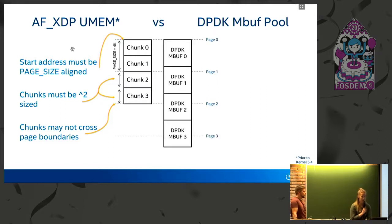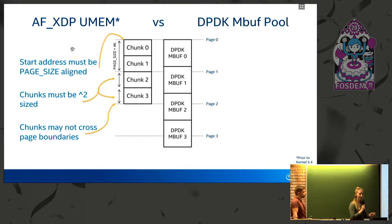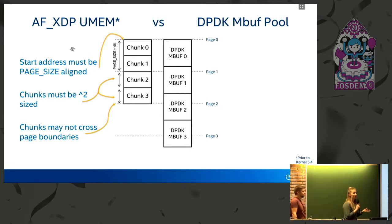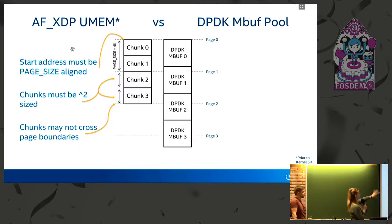Let's see how DPDK lays out its memory for packet handling and whether it satisfies the requirements of the AF_XDP umem. DPDK holds packet data inside structures known as memory buffers, or mbufs for short, and a group of those together is known as an mbuf pool. DPDK mbuf pools don't have as strict restrictions on them as the AF_XDP umem.